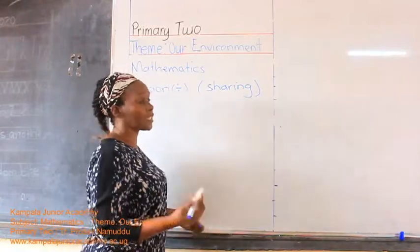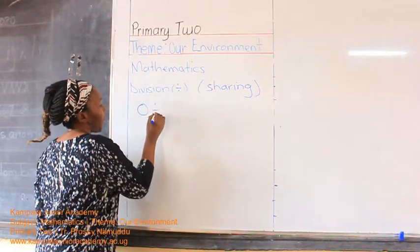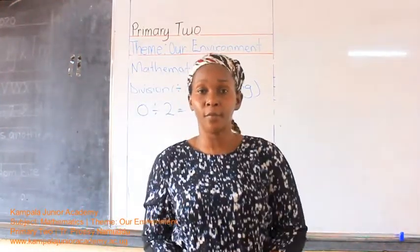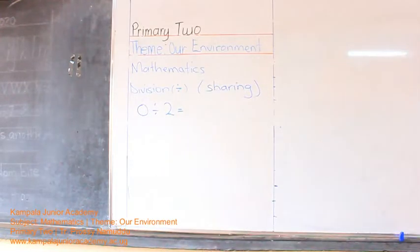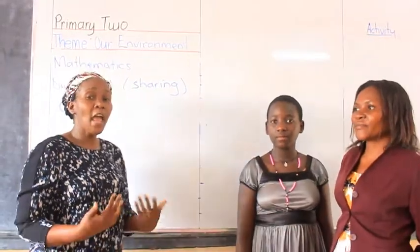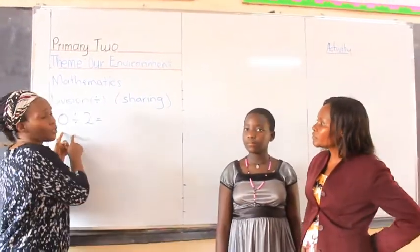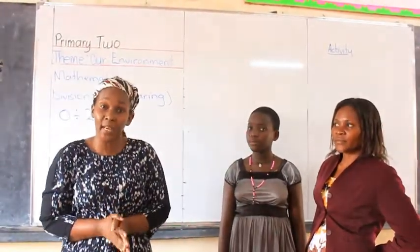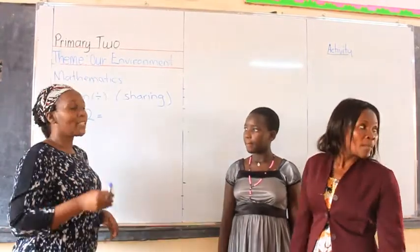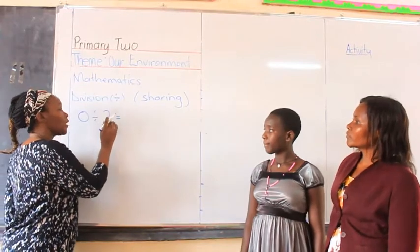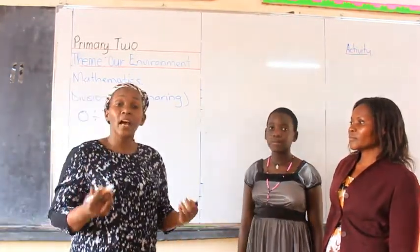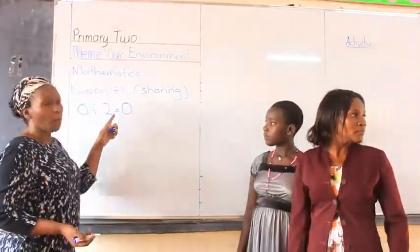We are going to begin with the smallest number. So if you have zero divide by two, that means you have nothing and you have two people to give. I have my two people here, but I have nothing in my hands. Are they going to get anything? No. I have nothing to give. So zero divided by two, or zero divided by any number, the answer is zero. There is nothing that you have to give them.